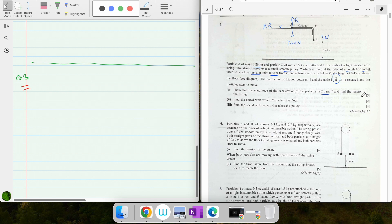A is released and the particles start to move. Show that the magnitude of acceleration is given, and find the tension in the string. Let's write equations for A and B. For B first - B is moving down, so weight minus tension equals ma. Net force is W minus T, where weight is 9, tension is unknown, mass is 0.9, acceleration is unknown.